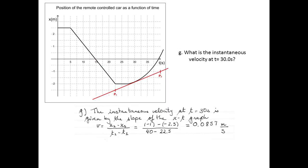The instantaneous velocity at 30 seconds is given by the slope of the position-time graph at 30 seconds. Since the position-time graph is not a straight line at 30 seconds, we trace a tangent to the graph at that point and calculate its slope. Point P1 is at 22.5 seconds and minus 2.5 meters; point P2 is at 40 seconds and minus 1 meter. The instantaneous velocity is: (−1 − (−2.5)) / (40 − 22.5) = 0.0857 meters per second at t equal to 30 seconds.